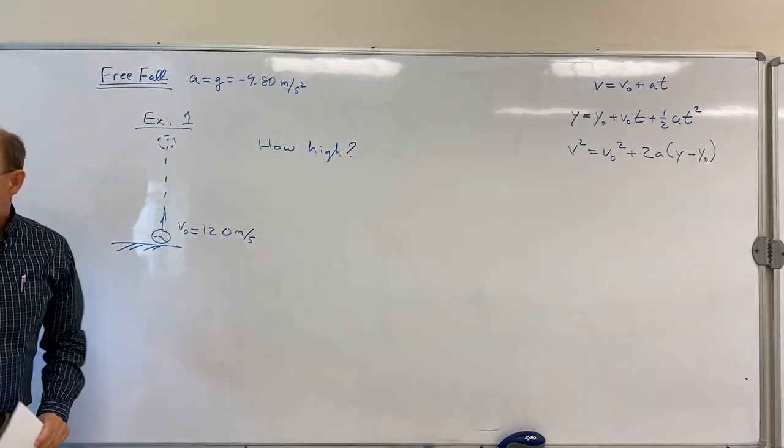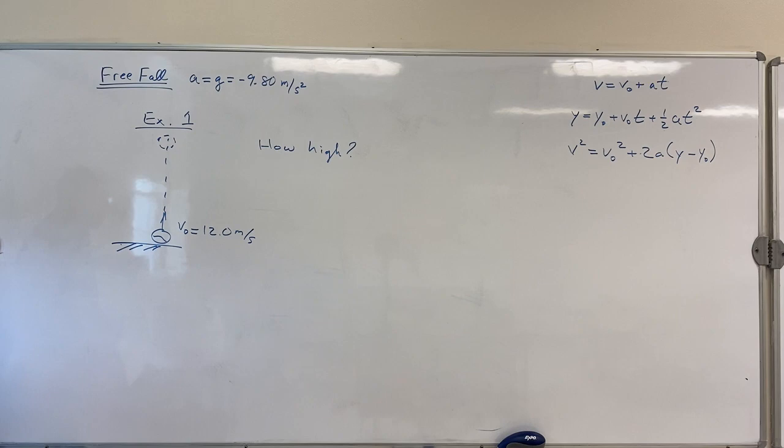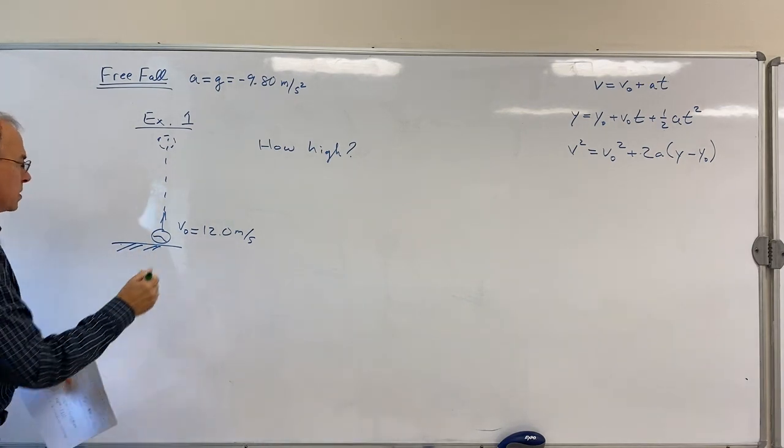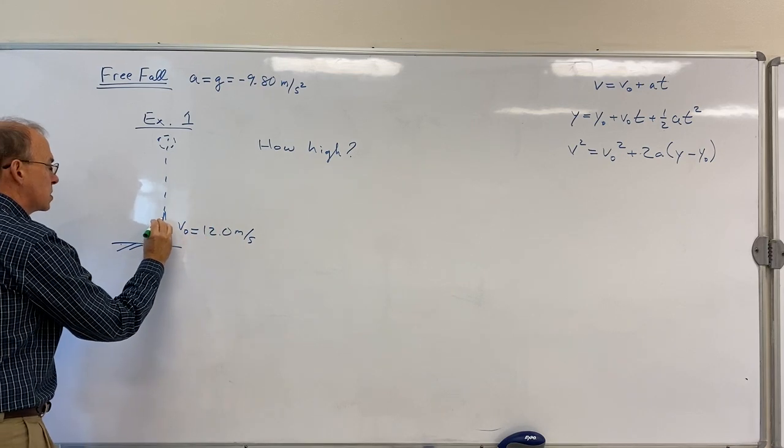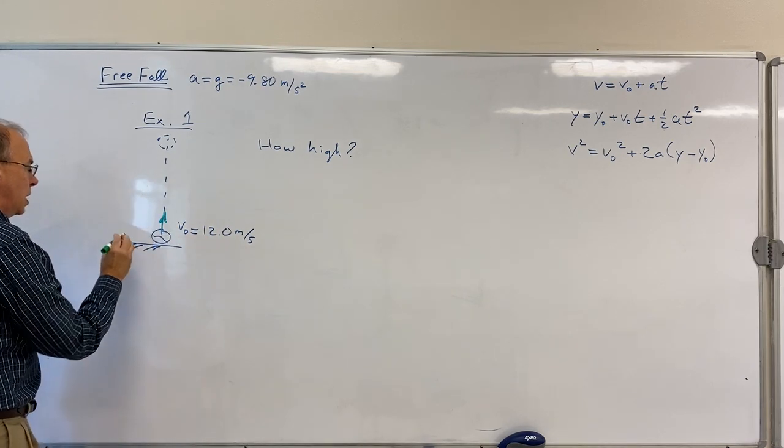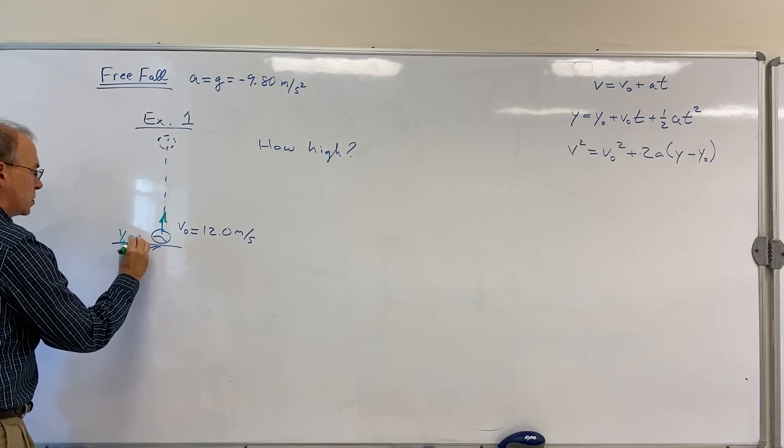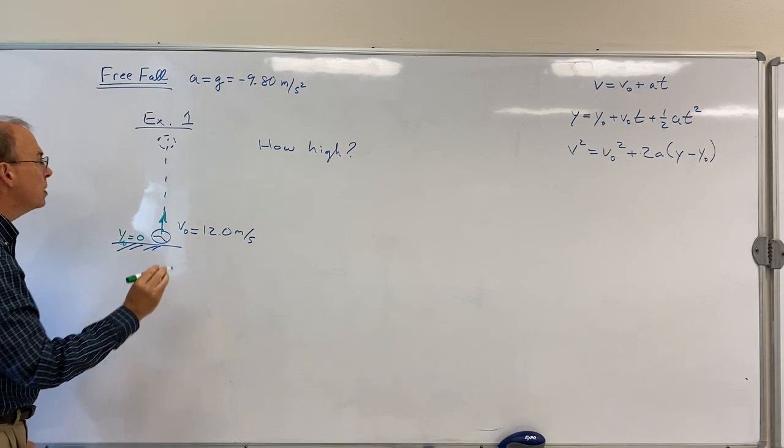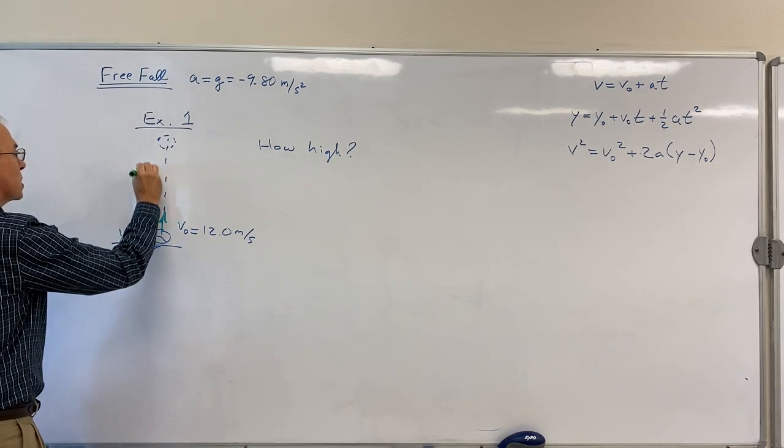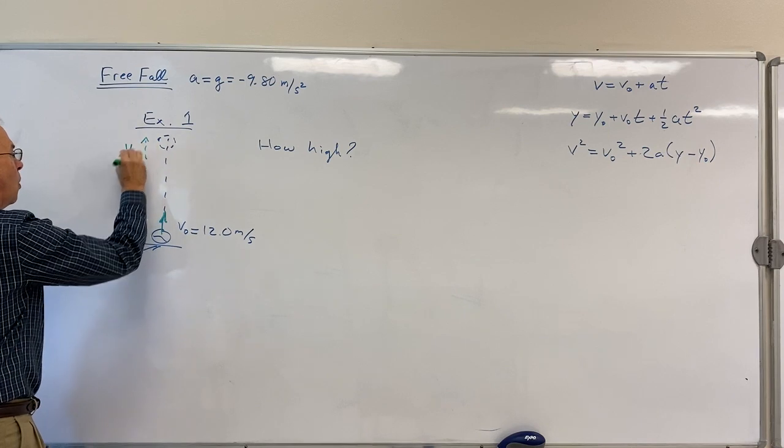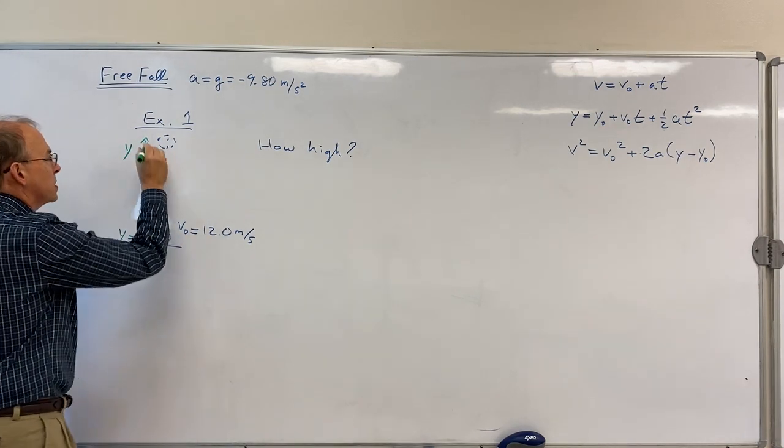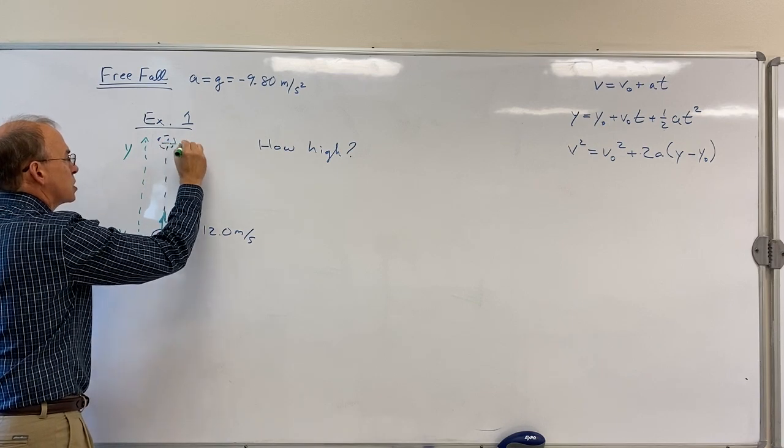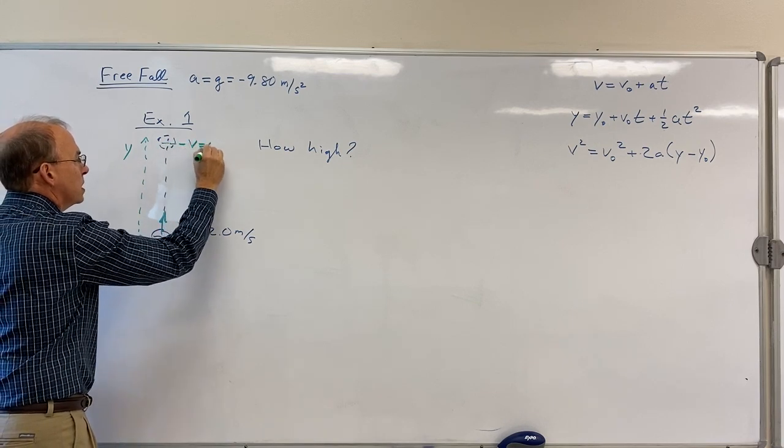So I have to lay out the variables for my problem. My initial velocity is plus 12 meters per second, plus because it's going up. We're going to let y₀ equal zero here where I throw it up. It's going to go up to some height y that I want to know. The other bit of information I have is that at its highest point, v is zero.